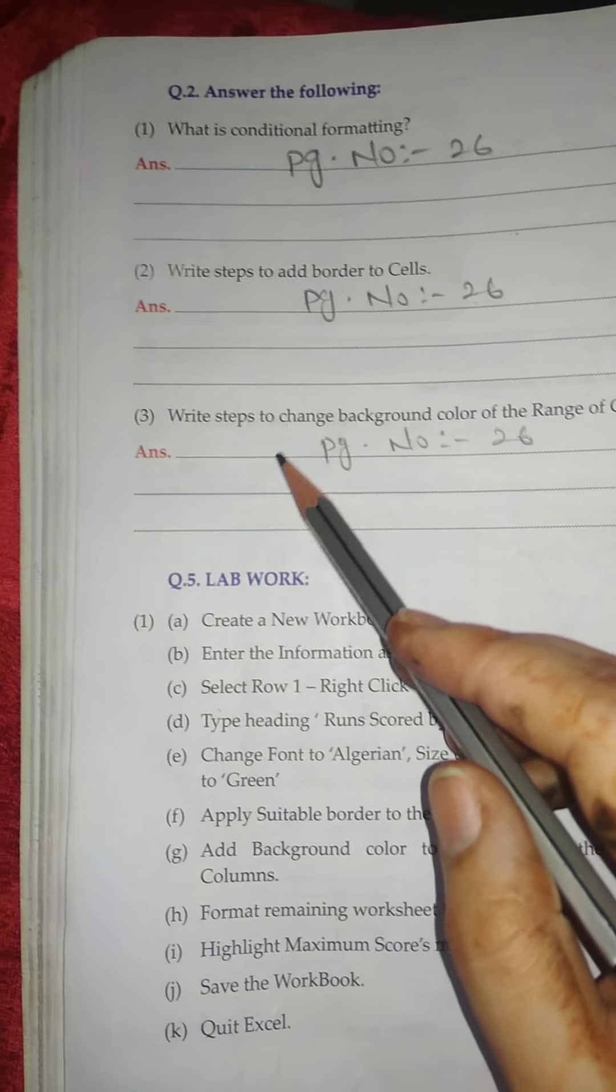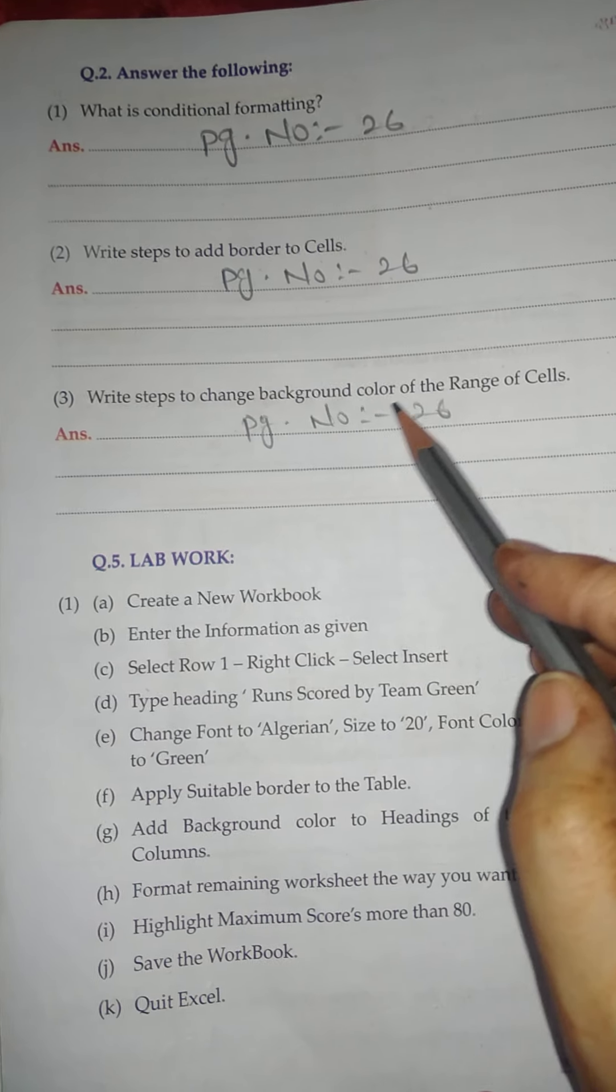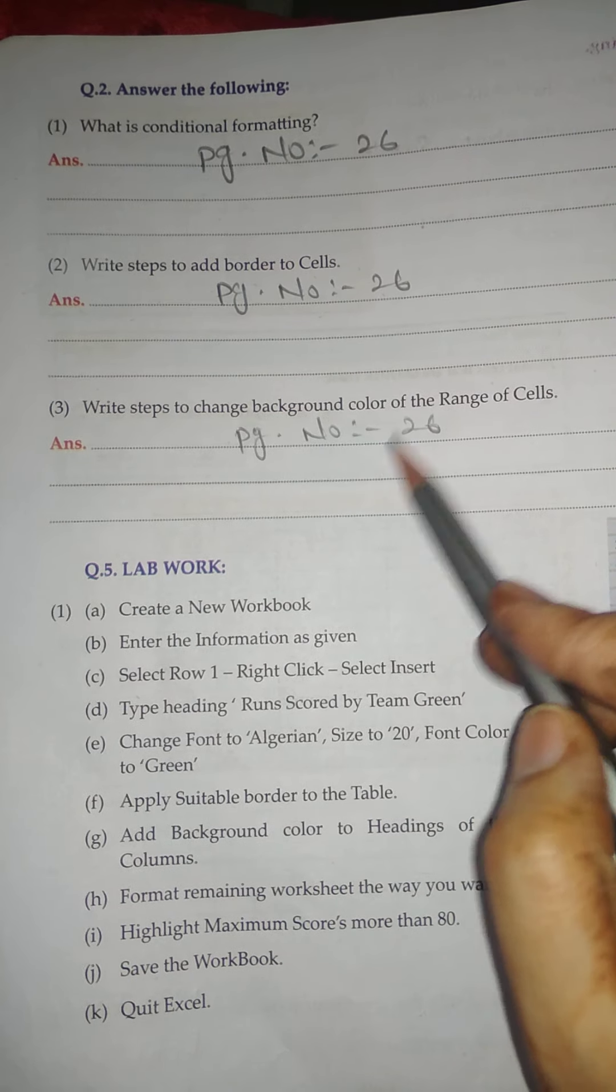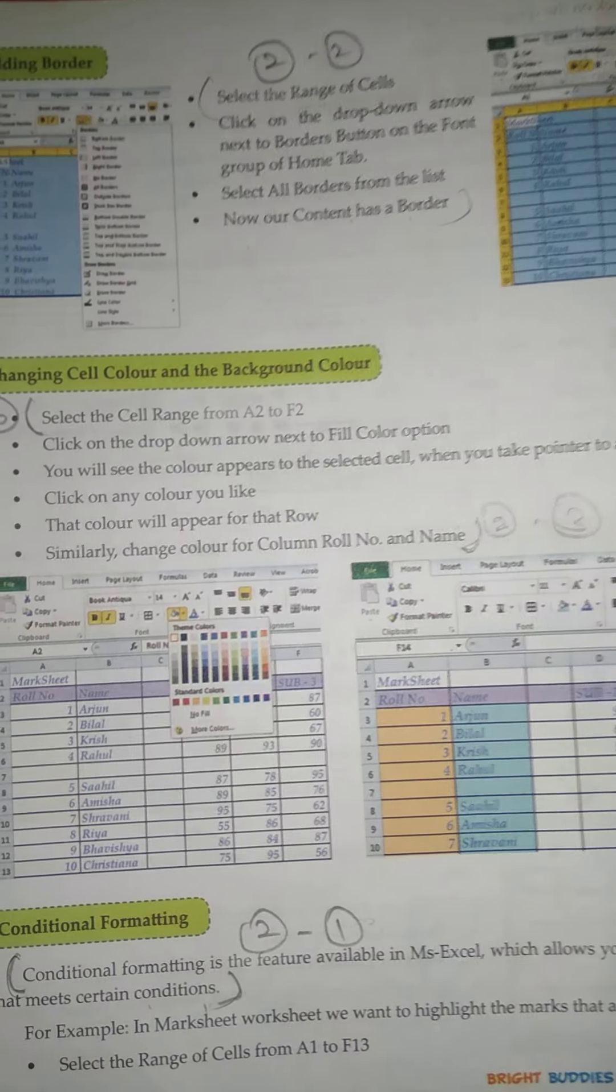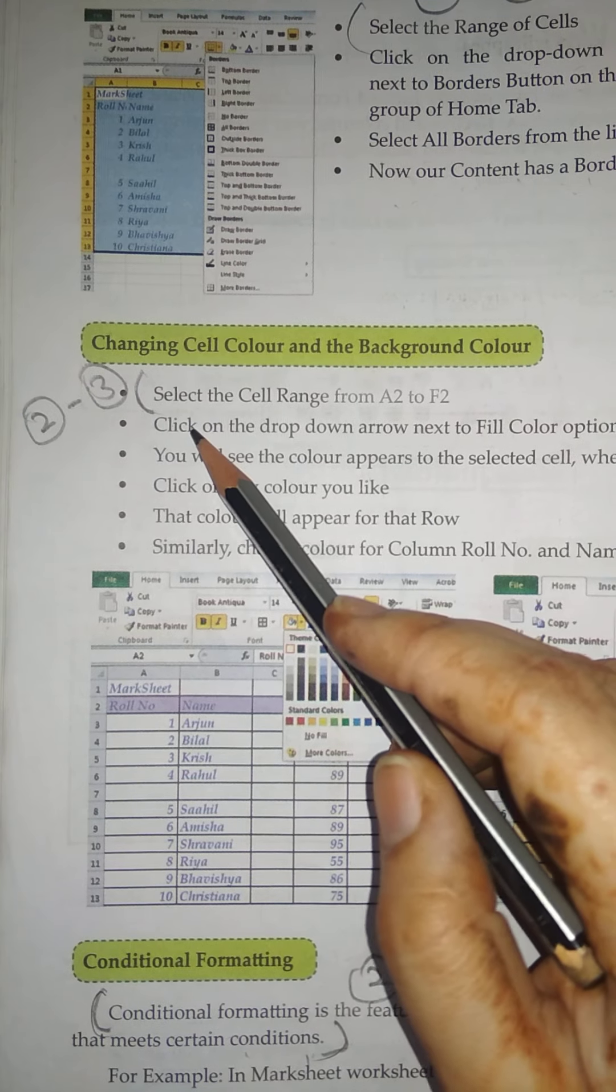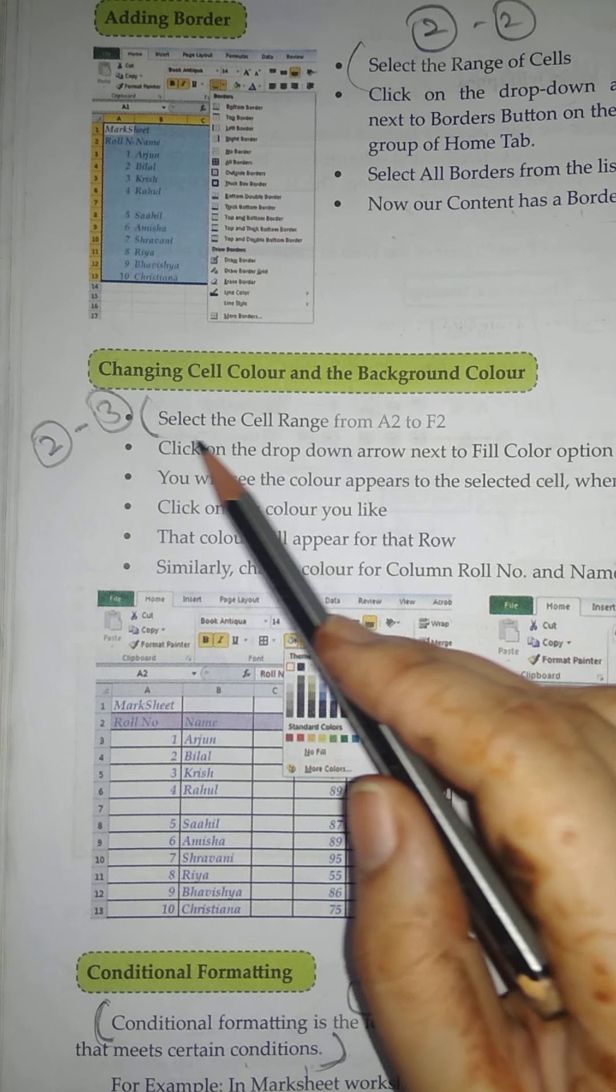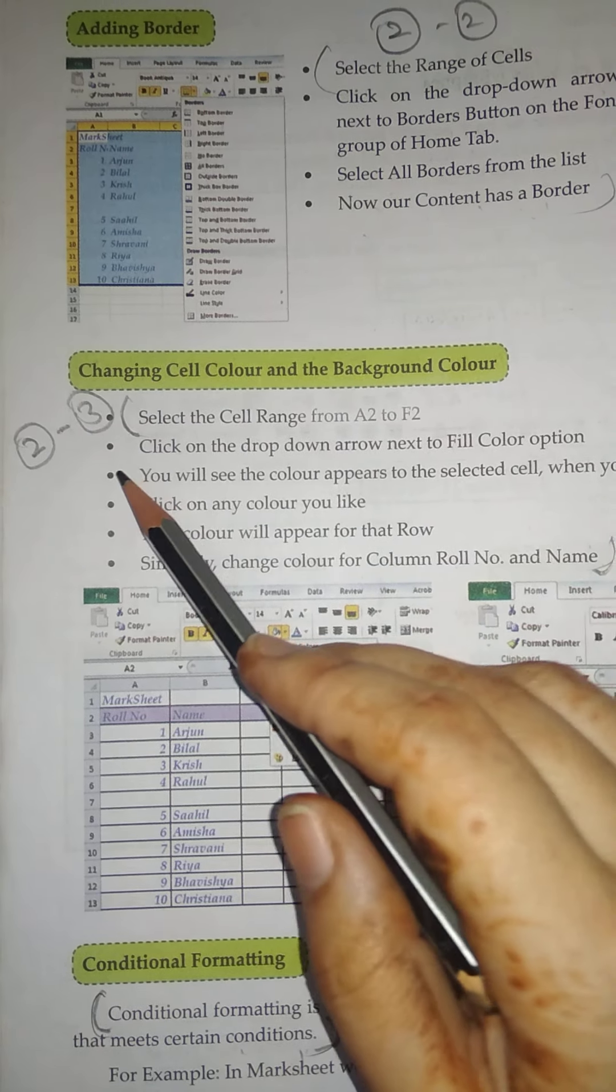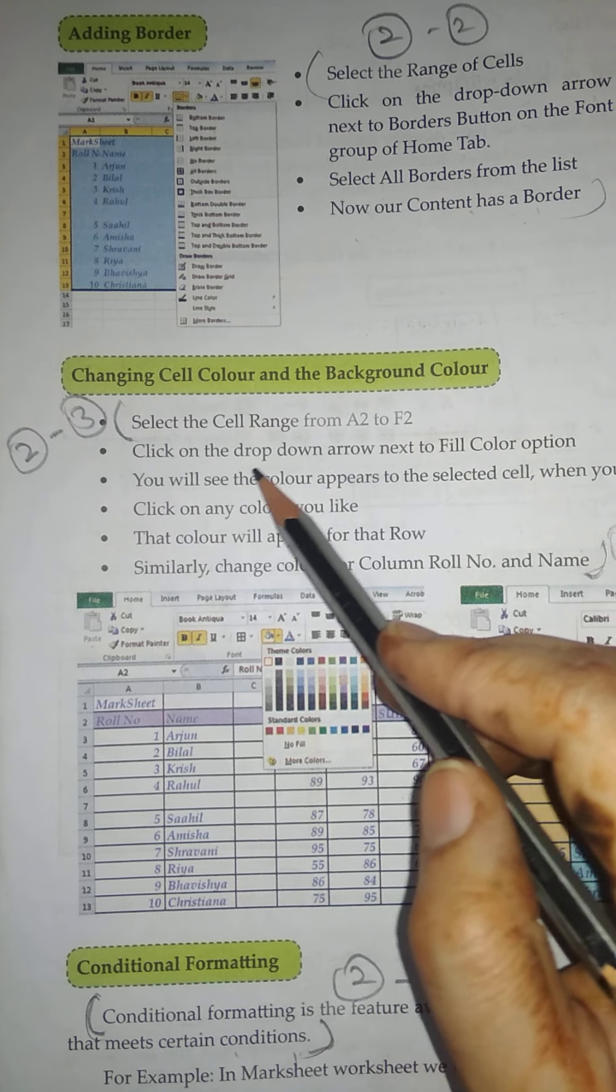Question number three: Write steps to change background color of the range of cells. Answer is on page number 26. Point number one: Select the cells range from A2 to F2. Point number two: Click on the dropdown arrow next to Fill Color option.